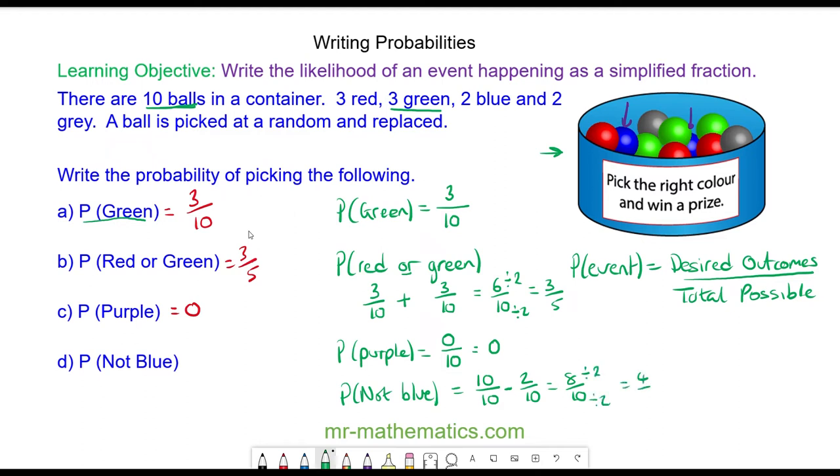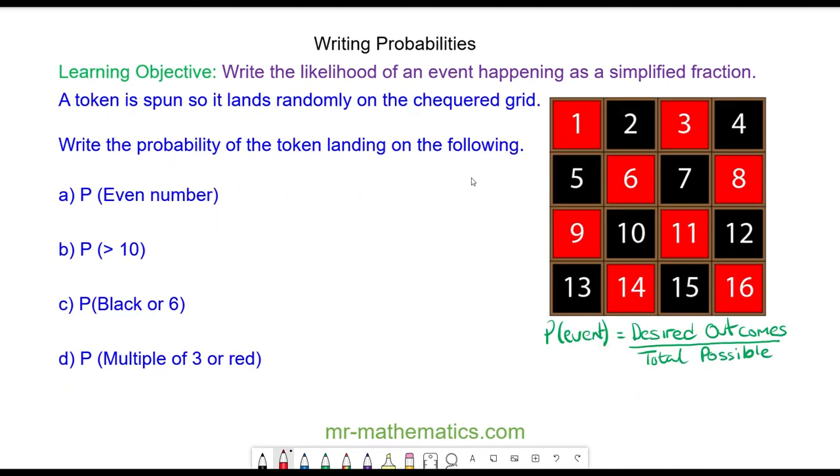So 4/5 - the probability of not picking a blue ball is 4/5. Okay, let's try some more questions. A token is spun so it lands randomly on the checkered grid. Write the probability of the token landing on the following. Do you want to try and work out the probability of a, b, c, and d by pausing the video?